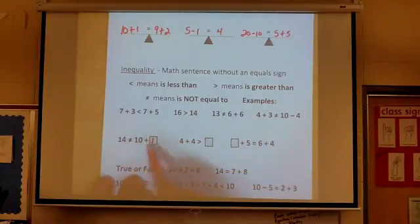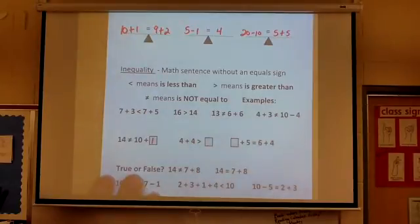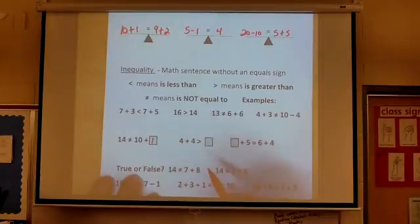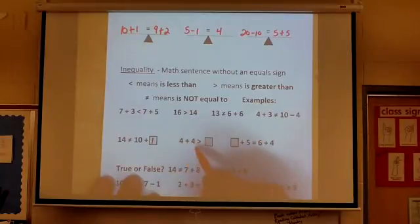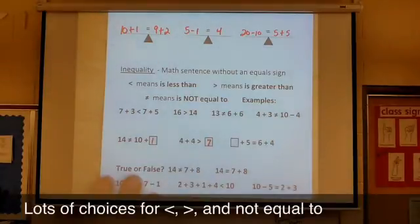Same with this one. 4 plus 4 is greater than, so here I have to put something that is 7 or less than 7. If I put 10 in here, then that's not going to be true. In order to keep this true, I have to put a number that's smaller than this side here. Over here I've got 8, so over here I have to have something that's 7 or less than 7.